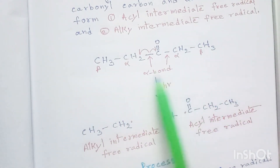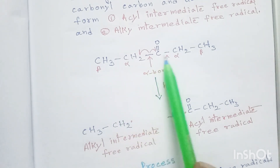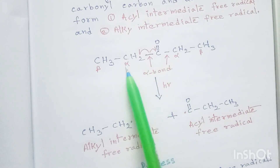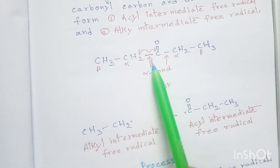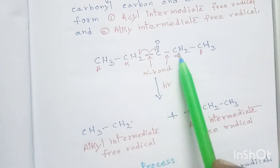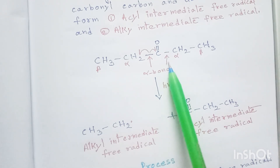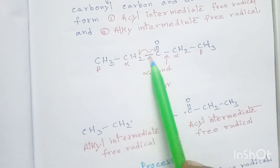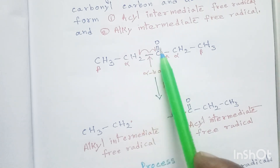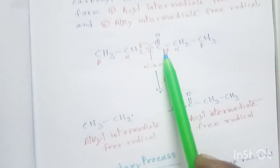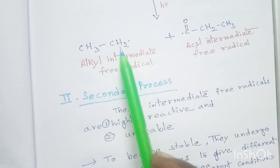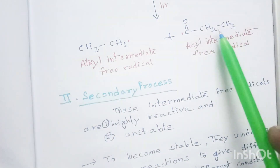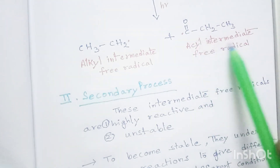This is the carbonyl compound: CH3-CH2-C=O-CH2-CH3. This is the alpha carbon adjacent to the carbonyl group, and this is the alpha bond. Either alpha bond can cleave. If this bond cleaves, a radical is formed on this CH2 and a radical is formed on this C=O, giving us CH3-CH2 radical (the alkyl intermediate free radical) and CH3-CH2-C=O radical (the acyl intermediate free radical).